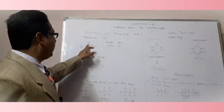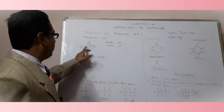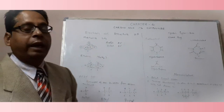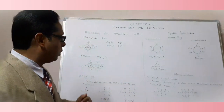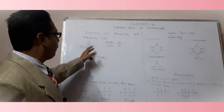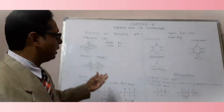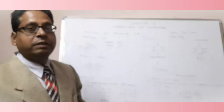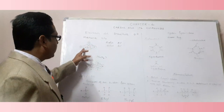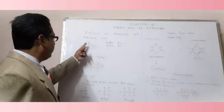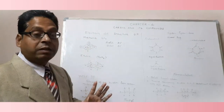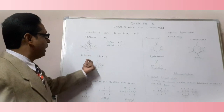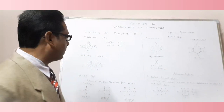Carbon has a valency of four, so it has four electrons in its outer shell, shown as four dots. Hydrogen has one electron in its valence shell, shown as a cross. So four crosses are shown around the carbon atom. Each hydrogen completes its duplet, and at the same time the carbon atom completes its octet.